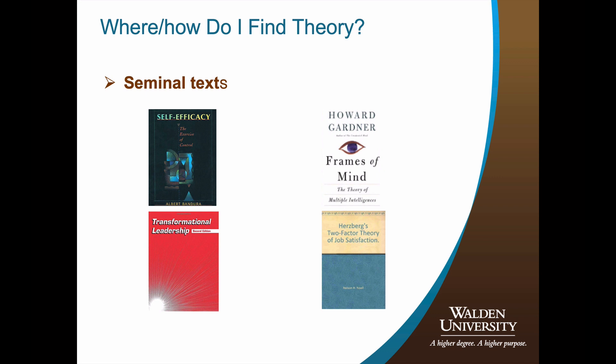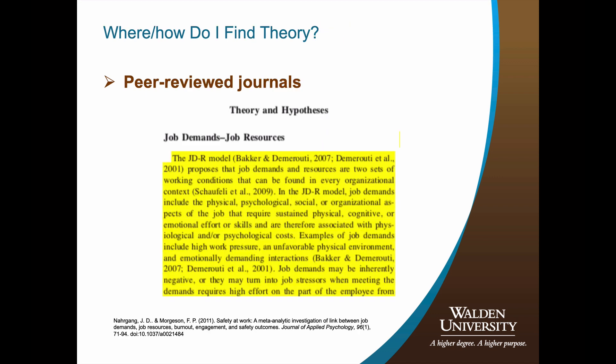Applicable theories can be found in seminal texts or peer-reviewed literature. For example, Bandura's self-efficacy theory was introduced in his text titled Self-Efficacy: The Exercise of Control. Likewise, the theory of multiple intelligences was introduced by Dr. Howard Gardner in his seminal text titled Frames of Mind: The Theory of Multiple Intelligences. You would also be able to locate peer-reviewed literature addressing these theories. This slide depicts the job demands–job resources theory located in a peer-reviewed journal. Peer-reviewed journals are excellent sources for identifying theories.